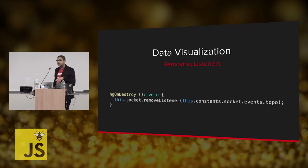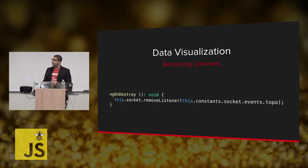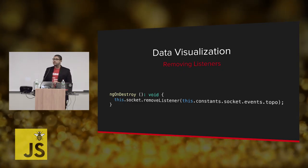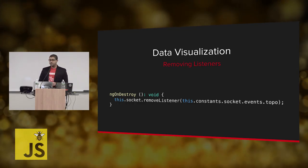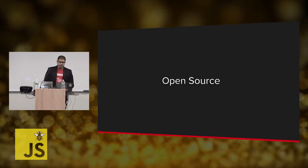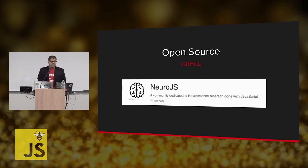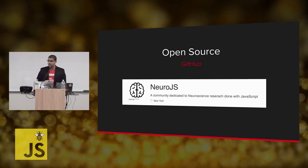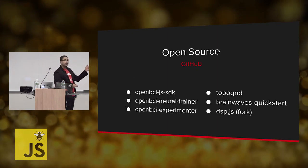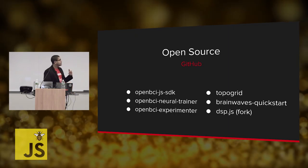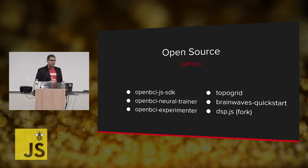Something very important for performance is that you want to hook into the ngOnDestroy lifecycle method of the Angular component to make sure that you're removing socket listeners. Because having a lot of listeners is not great for the performance of your application. For open source, if you go to github.com/neurojs, you can find this project and others — including a neural trainer and an experimenter app, all in early stages.